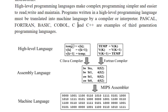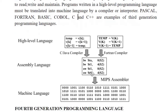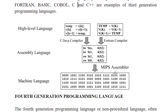You can see here that high level languages like C, Java, and Fortran — the compiler is used to convert them into a semi language (assembly), and then that semi language is converted into machine language using an assembler.